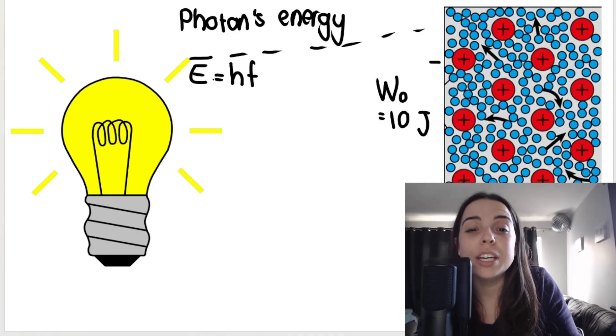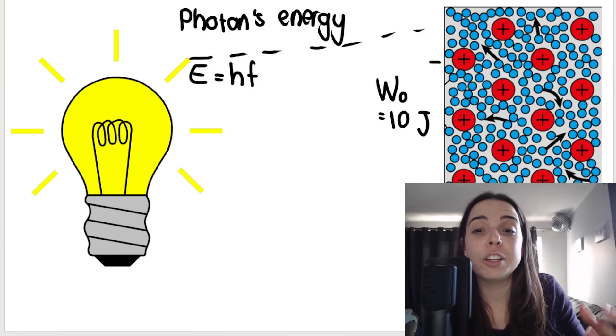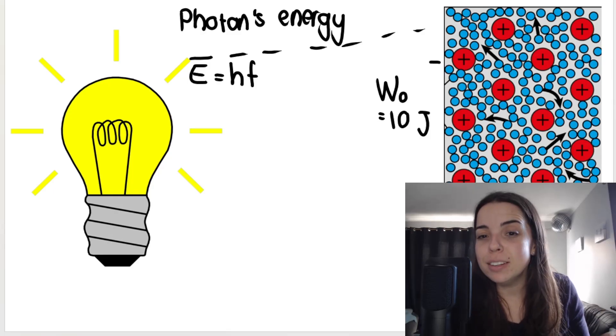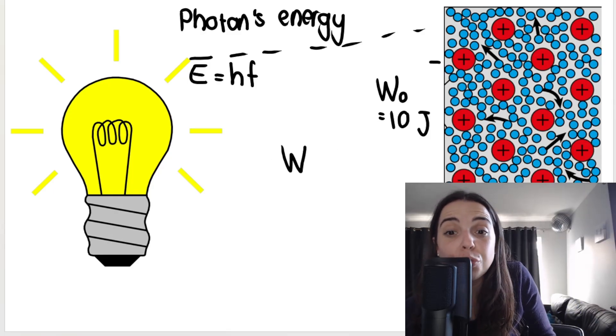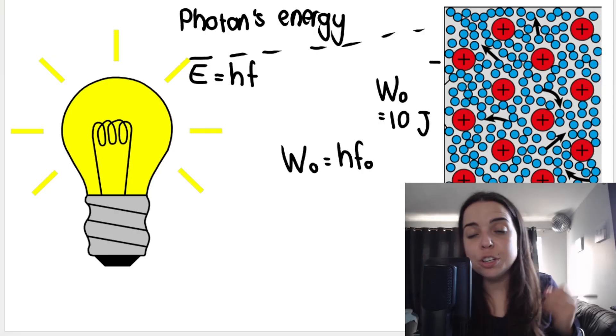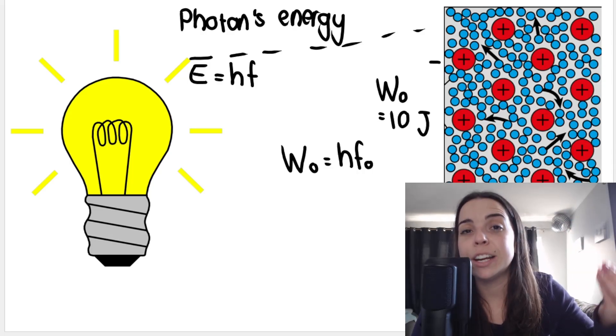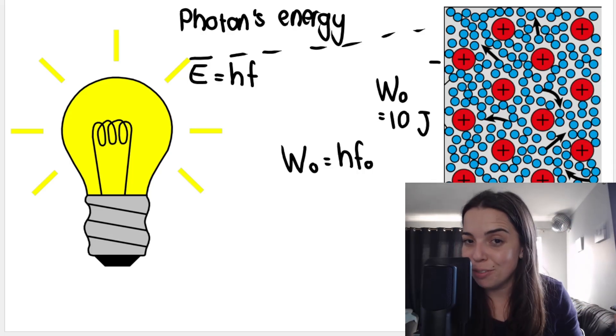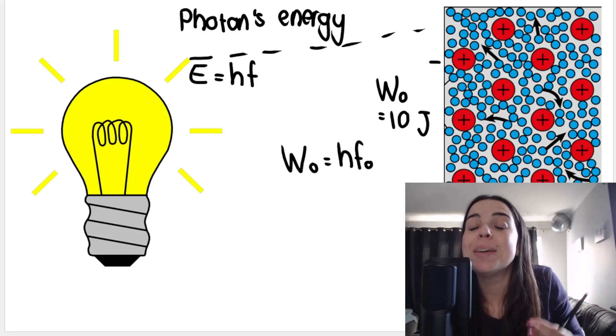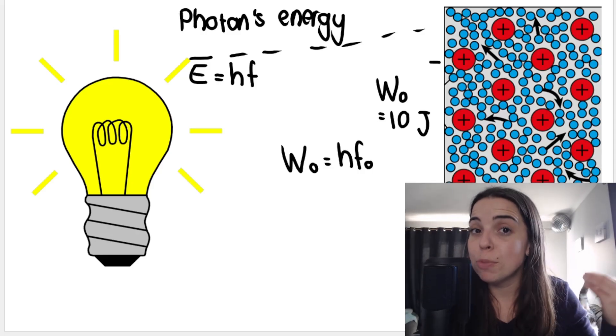We can work out the energy of the photon using this formula. We also spoke about work function which is inherent to the metal. Different metals have different threshold frequencies and therefore they have different work functions.